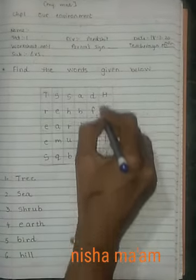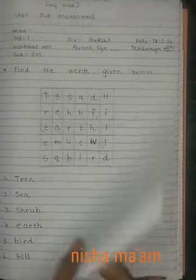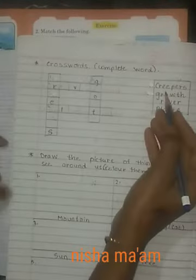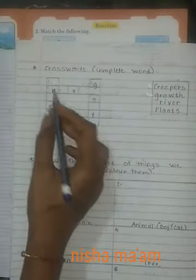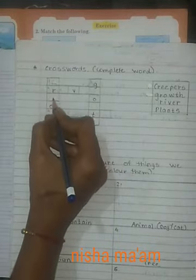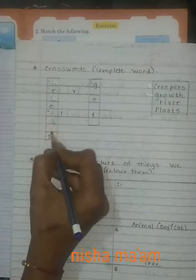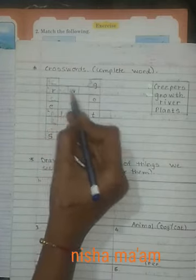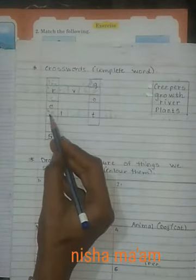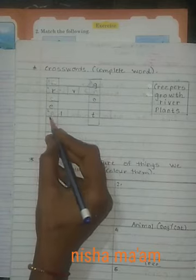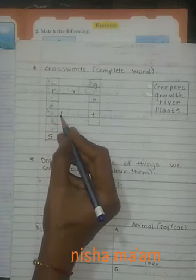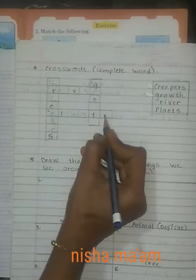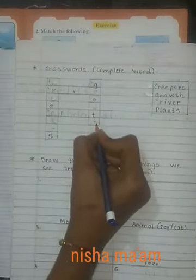Hill — this will be in the exam. Activity: complete the words. Here you have a spelling to complete. C-R-E-E-P-E-R-S — creepers. R-I-V-E-R — river. P-L-A-N-T-S — plants. G-R-O-W-T-H — growth.